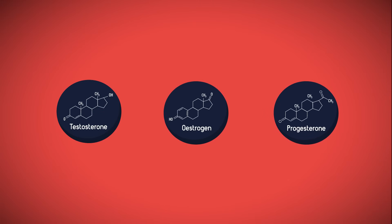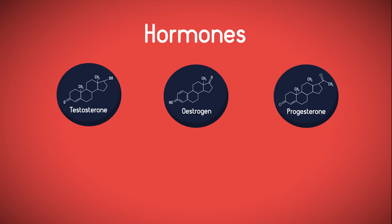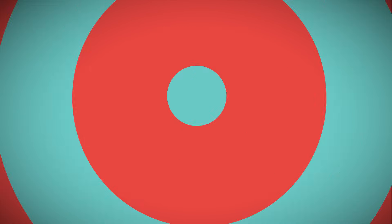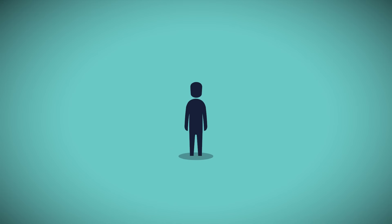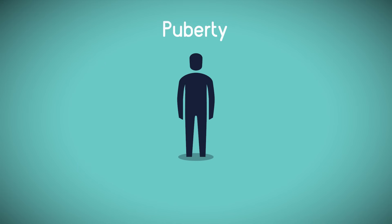Testosterone, oestrogen and progesterone. Hormones, as you have learned in a previous lesson, are chemical messengers secreted by glands and have specific target organs. In this lesson, you will learn about hormones that stimulate changes to your body during puberty.